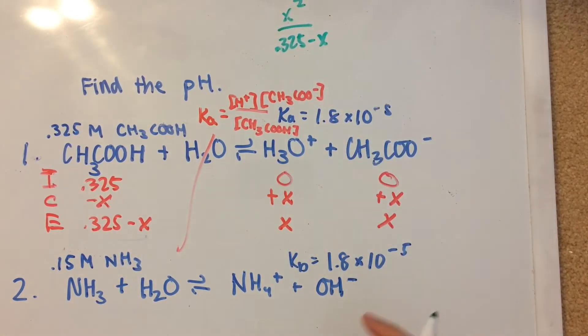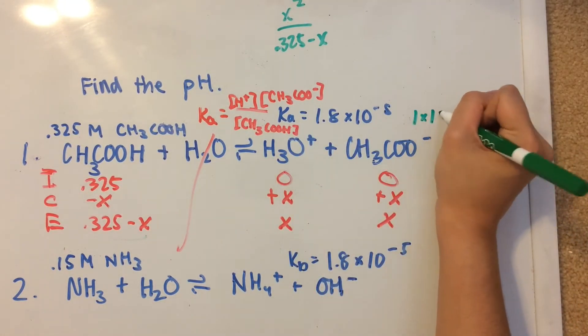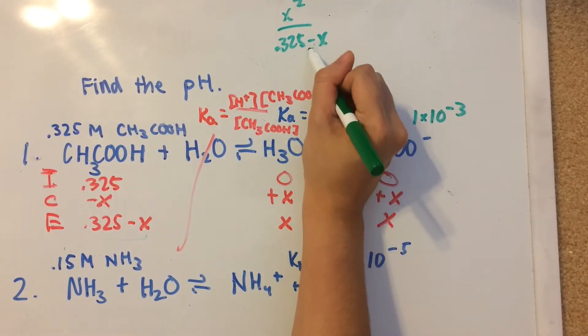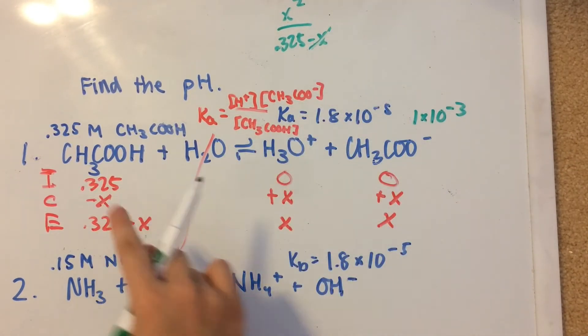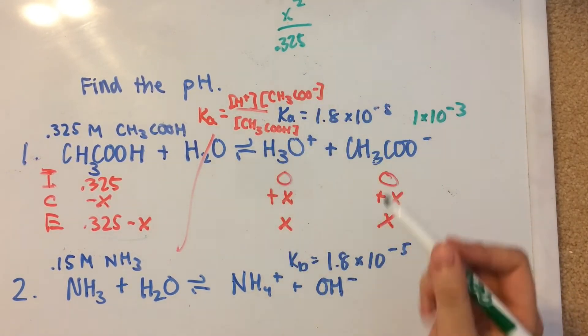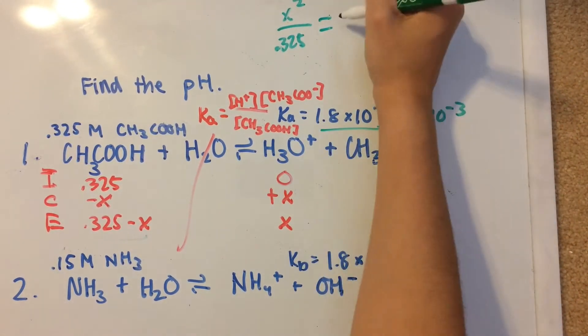But there's actually a very handy shortcut for this. Whenever you have a Ka that is less than 1 times 10 to the negative third, then you can take away the x for anything that has an initial concentration. So that would turn into x squared over 0.325. And we set that equal to the Ka value here.